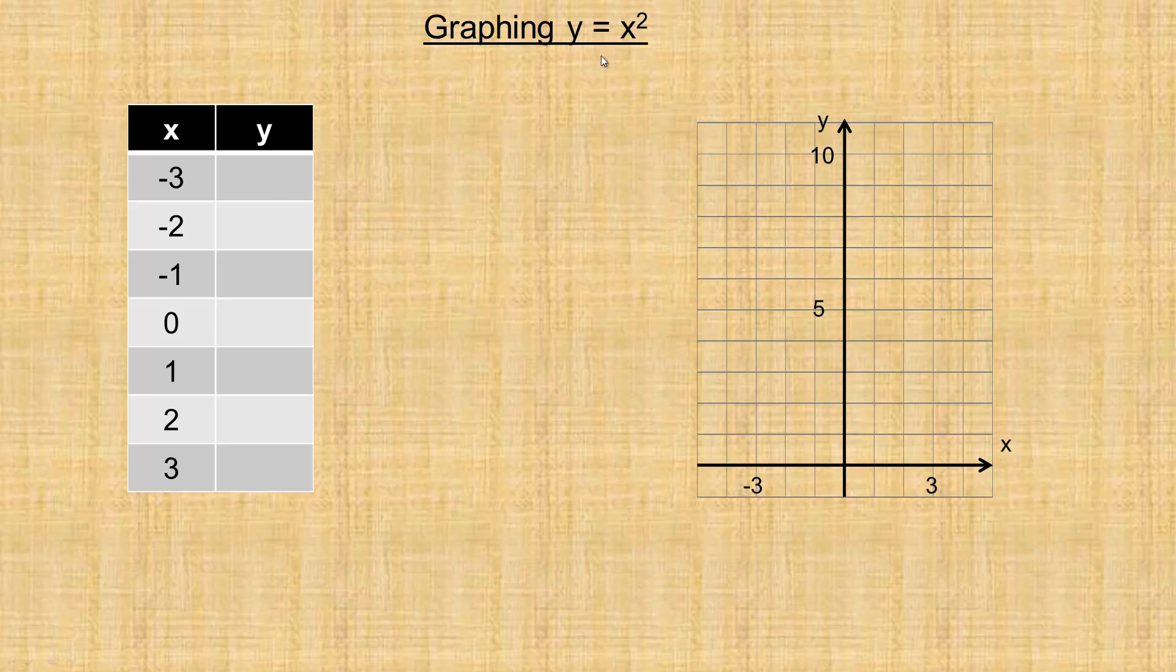If I substitute a number like 10 for x in here, 10 squared is 100. I'd need a pretty big graph height-wise in order to be able to graph that point. So that's why I wouldn't put a number like 10 in my table. There might be times when that might be appropriate.